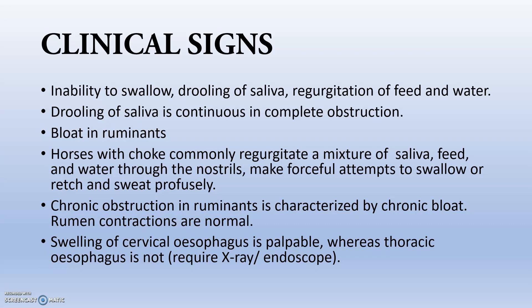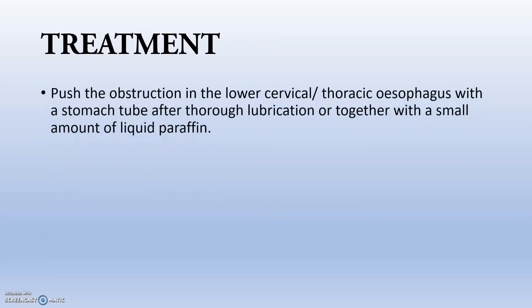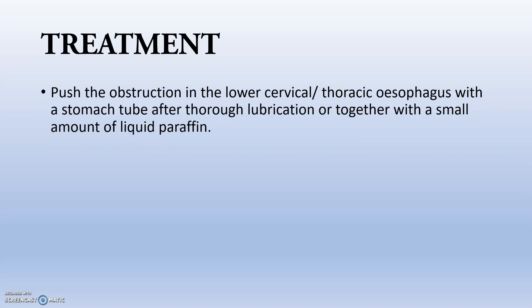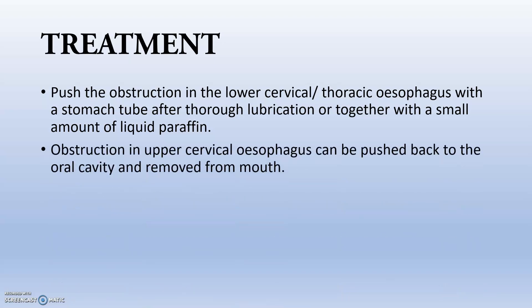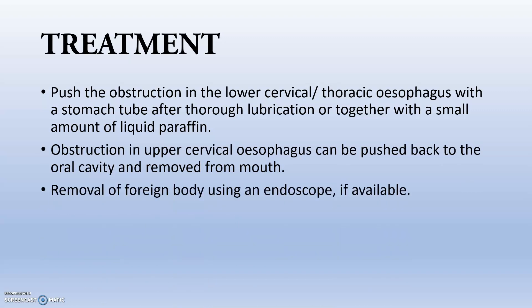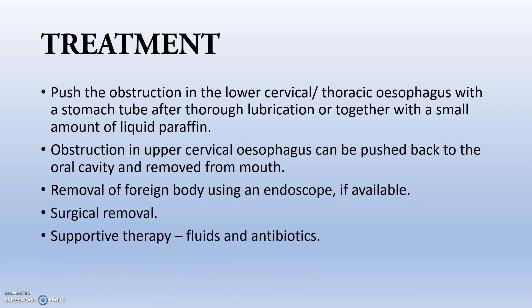For thoracic obstruction, we require an X-ray or endoscope. For treatment: push the obstruction in the lower cervical or thoracic esophagus with a stomach tube after thorough lubrication together with a small amount of liquid paraffin, so the obstructive material can pass down or come up. Upper esophageal obstruction can be pushed back to the oral cavity and removed from the mouth. Endoscopic removal or surgical removal are also options, along with supportive therapy, fluids, and antibiotics.